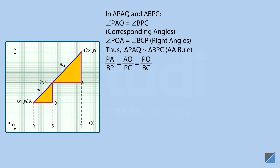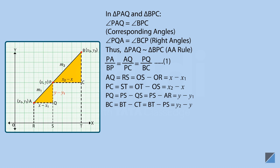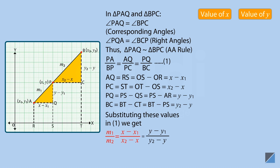Let us denote this ratio as equation one. Observe that AQ equals RS, and RS equals OS minus OR, therefore AQ equals x minus x₁. Similarly, PC equals ST, and ST equals OT minus OS, therefore PC equals x₂ minus x. PQ equals PS minus QS, but QS equals AR, so PQ equals y minus y₁. BC equals BT minus CT, but PS equals CT, so BC equals y₂ minus y. Let us substitute these values in equation one and solve the first two parts to obtain the value of x.